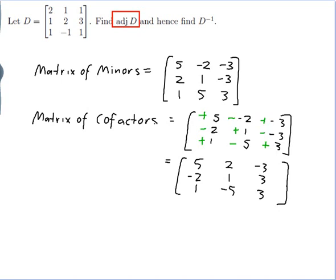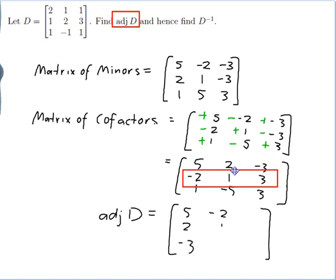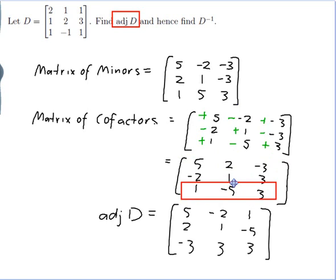Finally, the adjoint I get from the matrix of cofactors by doing the transpose. So the adjoint of D will be the transpose of the matrix of cofactors. That means the rows of the matrix of cofactors become the columns of the adjoint: row 1 becomes column 1: 5, 2, −3; row 2 becomes column 2: −2, 1, 3; row 3 becomes column 3: 1, −5, 3. So that's the adjoint.